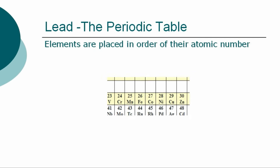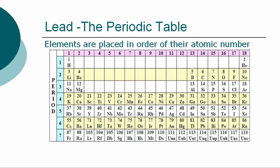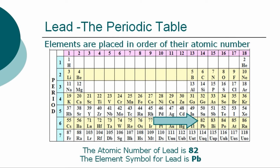The periodic table is a chart showing the symbols and the atomic numbers of all known elements, such as lead, in one large grid. The chemical elements of the periodic table are placed in order of their atomic numbers. Atomic numbers increase as you move across a row, called a group, or down a column, called a period. The atomic number for lead is 82 and the element symbol for lead is Pb.